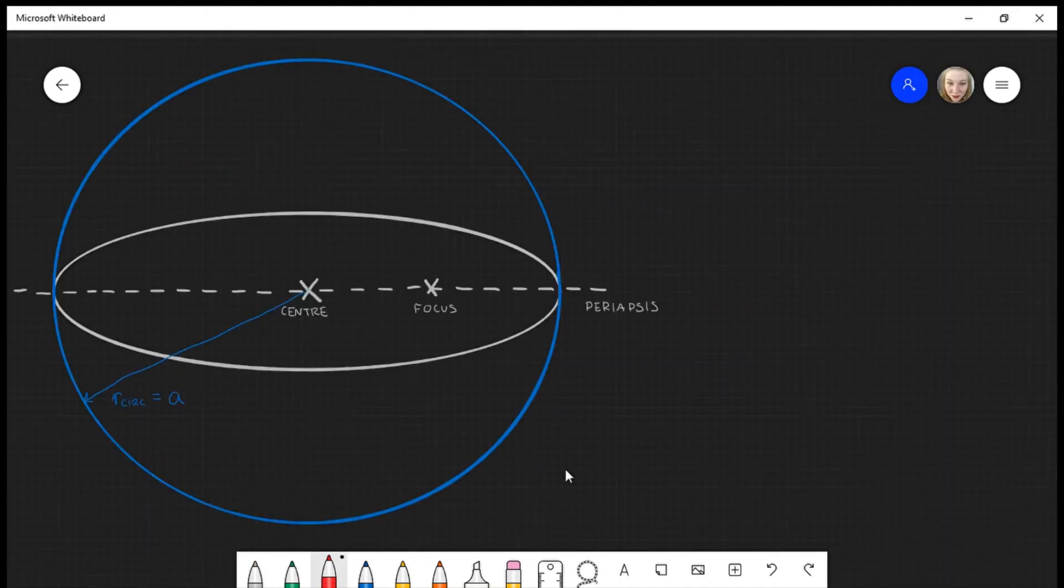Unless you're given the value of phi, you might need to calculate it yourself. On the picture you can see I have an ellipse. I've labeled the center, a focus point, and the periapsis. The blue circle has a radius that is equal to the semi-major axis of the ellipse.